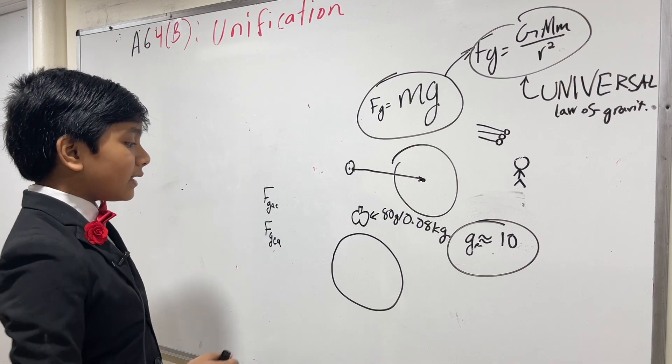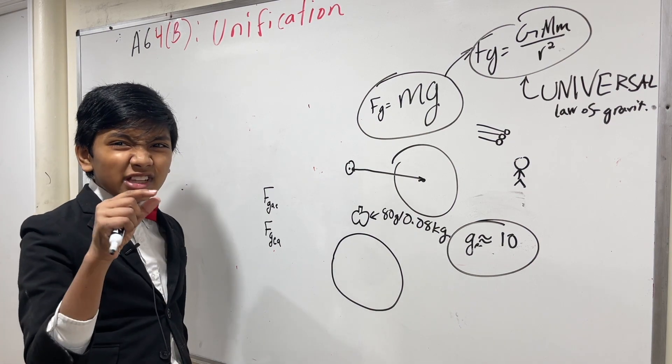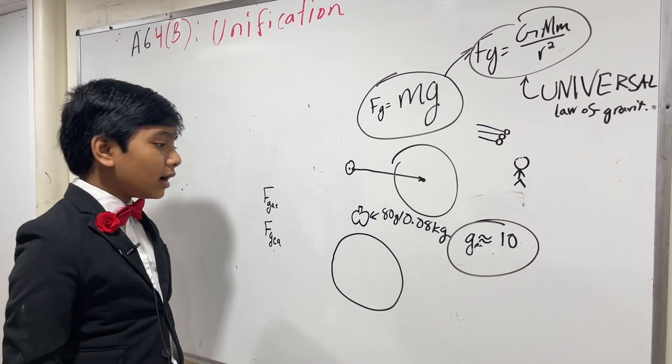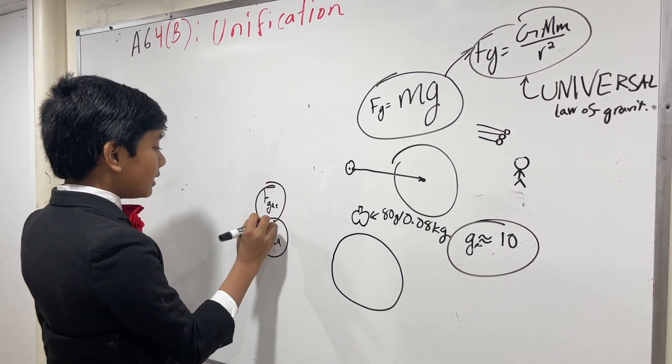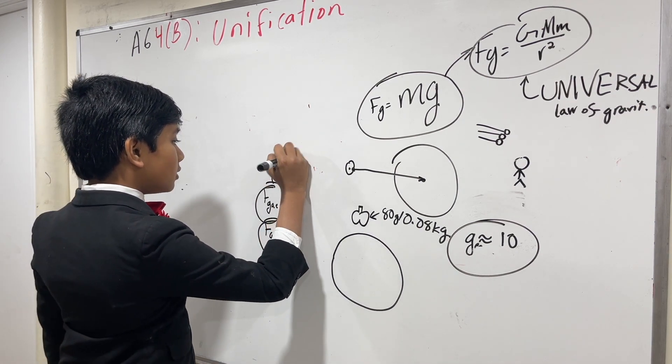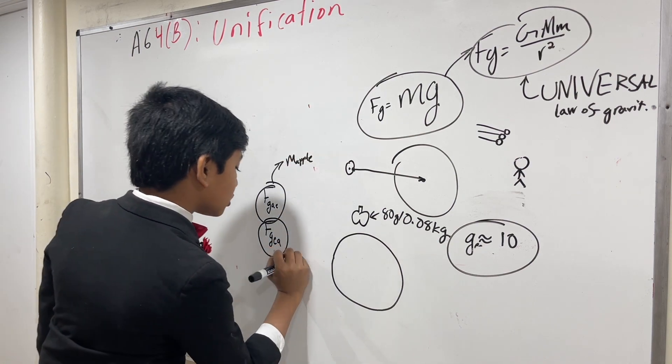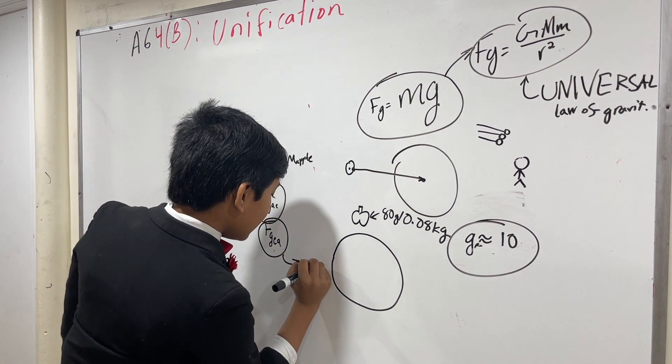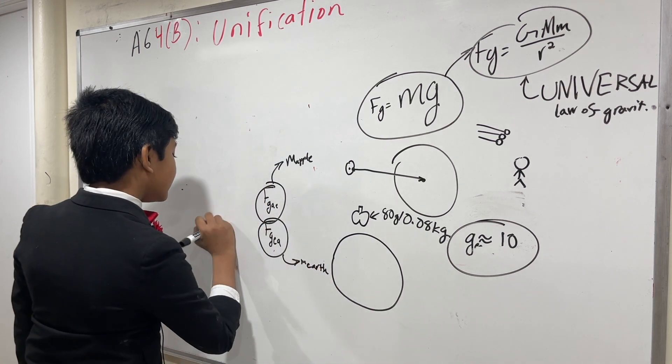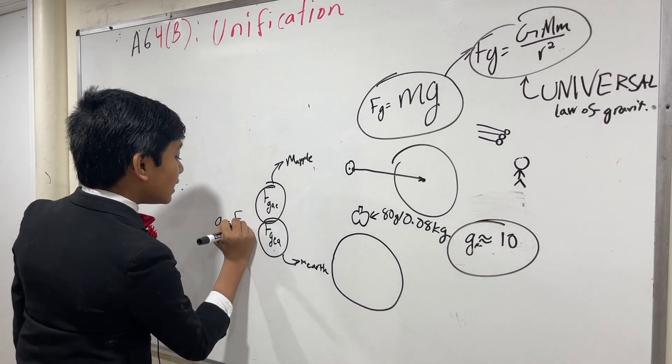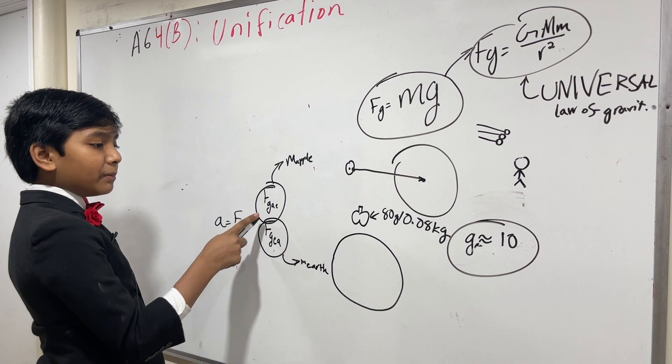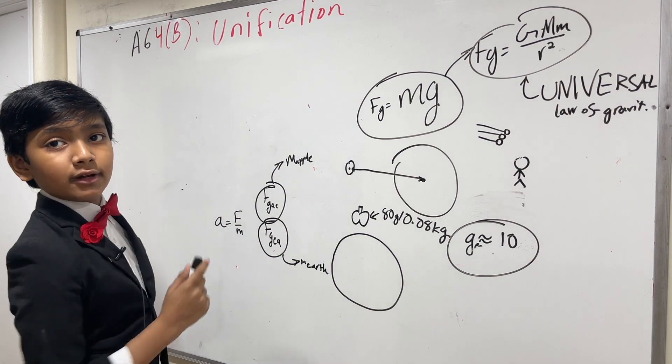Well, the reality is, it does move, but only a really tiny bit. Because, even though the force on them is the same, the masses of them are not. The mass of the apple is significantly smaller than the mass of the Earth. And since acceleration is F over M, that means that the acceleration of the apple is much bigger than the acceleration of the Earth.